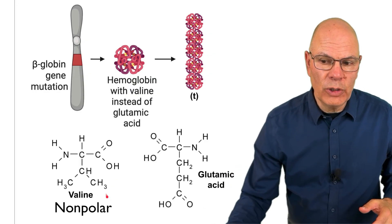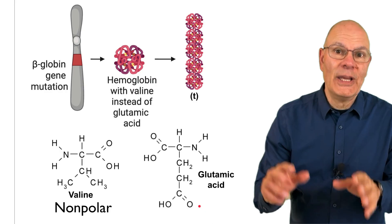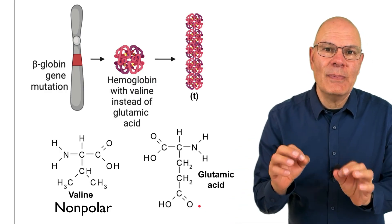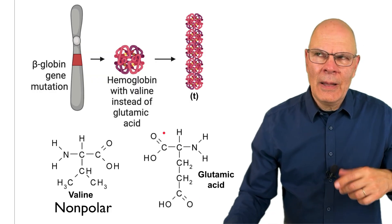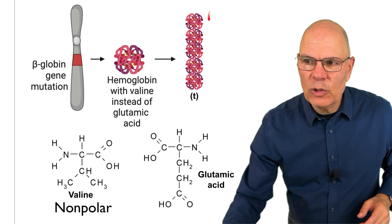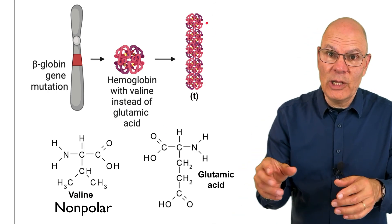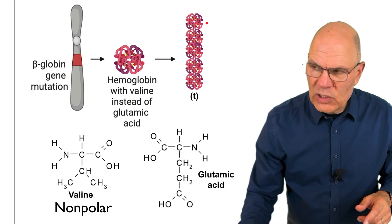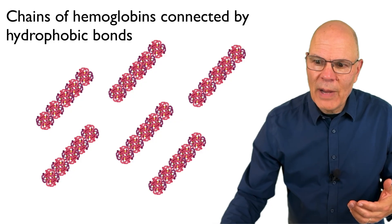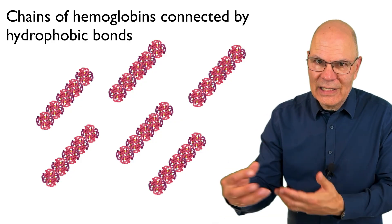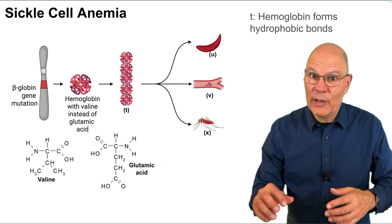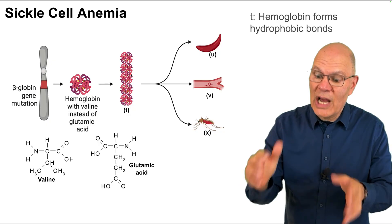That mutation leads hemoglobin to have the amino acid valine instead of glutamic acid. Valine is nonpolar — you can see these methyl groups — whereas glutamic acid ends in a carboxylic acid, making it acidic. That is a big deal because with a valine on its exterior, hemoglobin molecules become gregarious: they interact with one another, which they normally don't, and they form these long chains through hydrophobic bonds. These chains can be thought of as a kind of fifth-level structure — it's not supposed to be there.